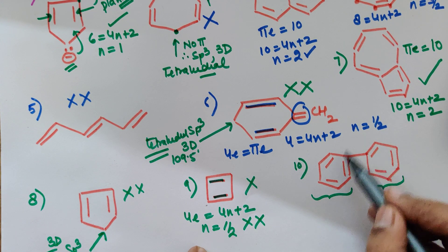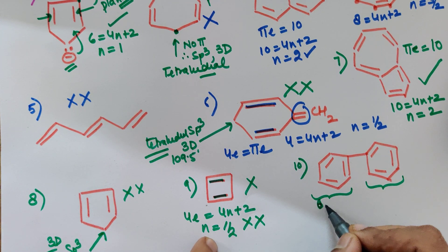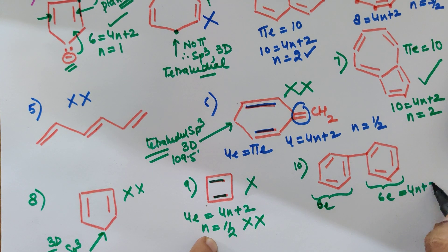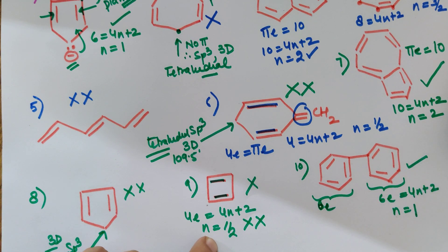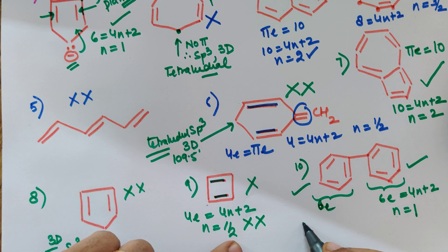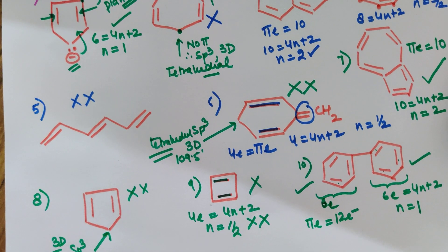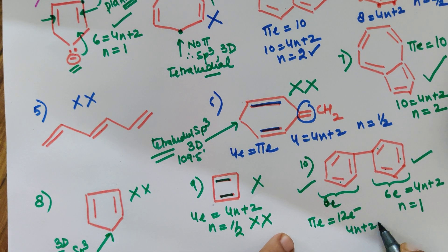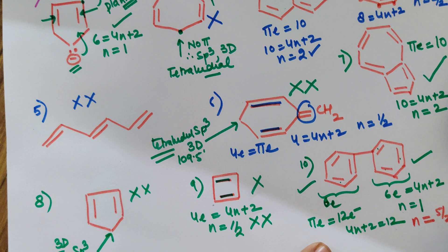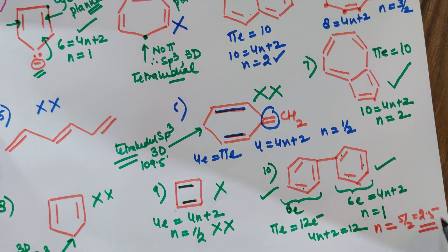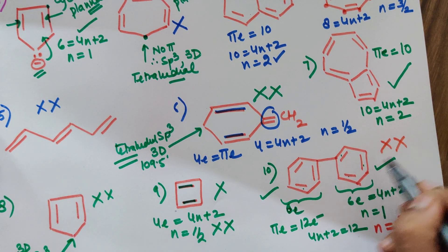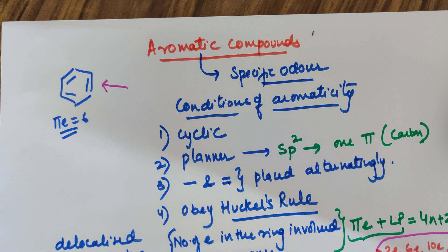Example 10: This is a specific case. Looking at individual rings, each ring has 6 pi electrons — obeying Hückel's rule with n = 1, so each ring is individually aromatic. However, if we take the whole compound, there are 6 pi bonds giving 12 electrons total. Fitting 12 = 4n + 2 gives n = 2.5, which is not a whole number. So on the whole, this compound is not aromatic — individual rings may be aromatic, but the complete compound is not.